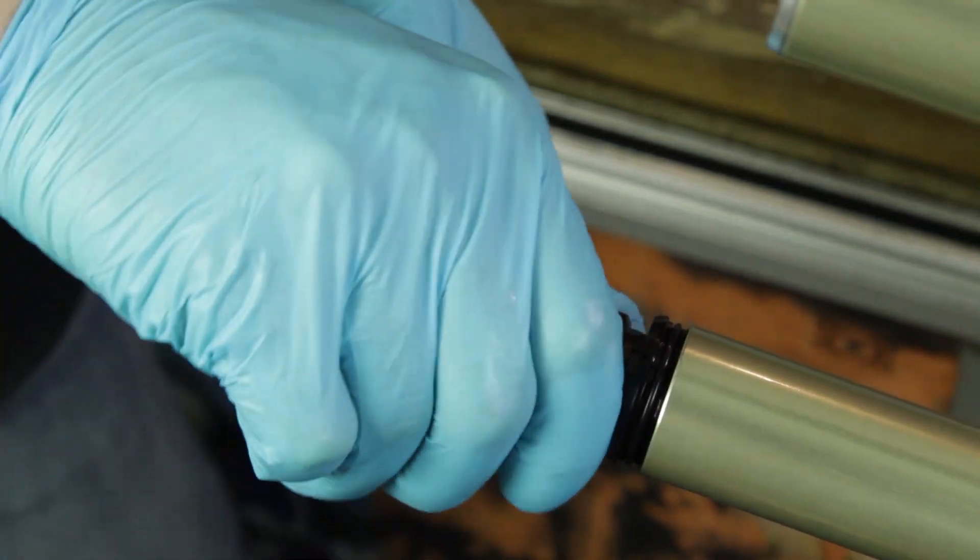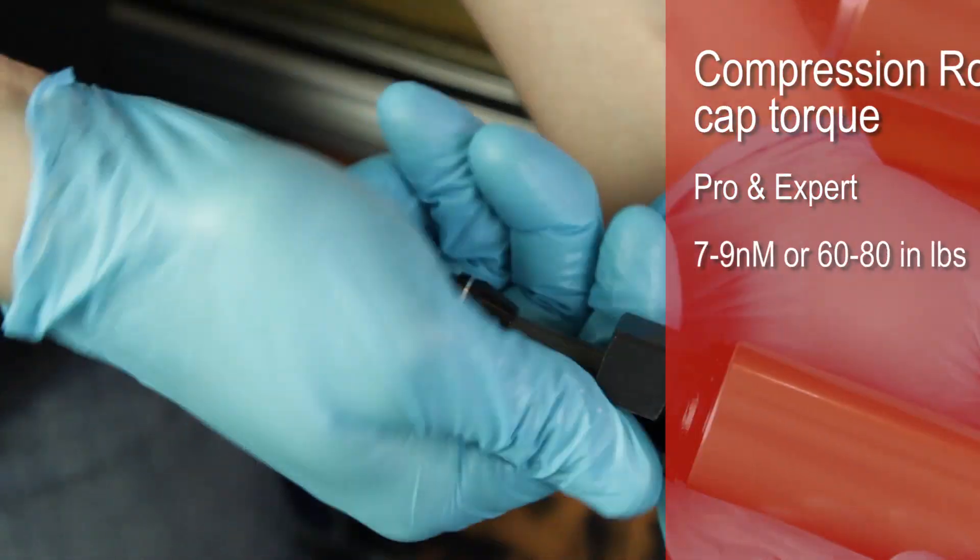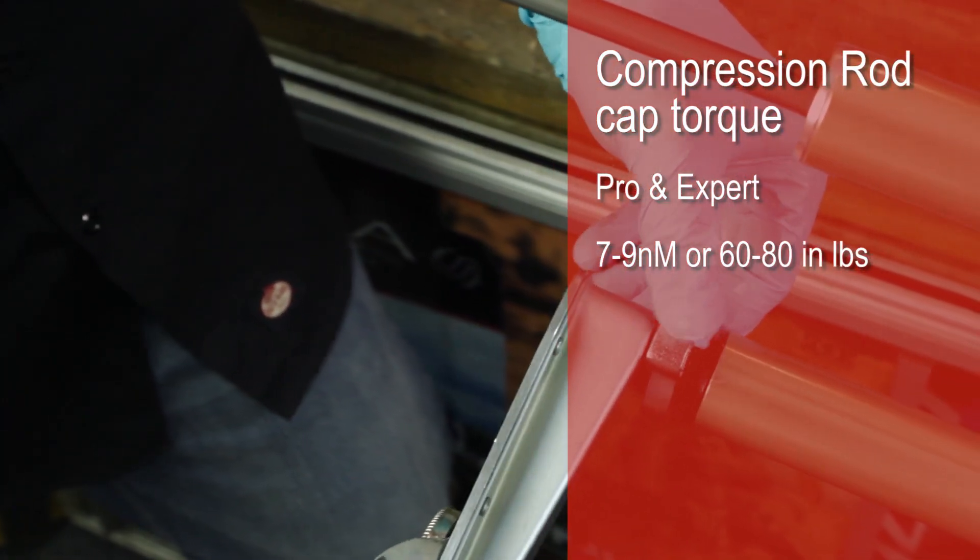Tighten down the compression rod cap to a torque of 7 to 9 newton meters or 60 to 80 inch pounds.